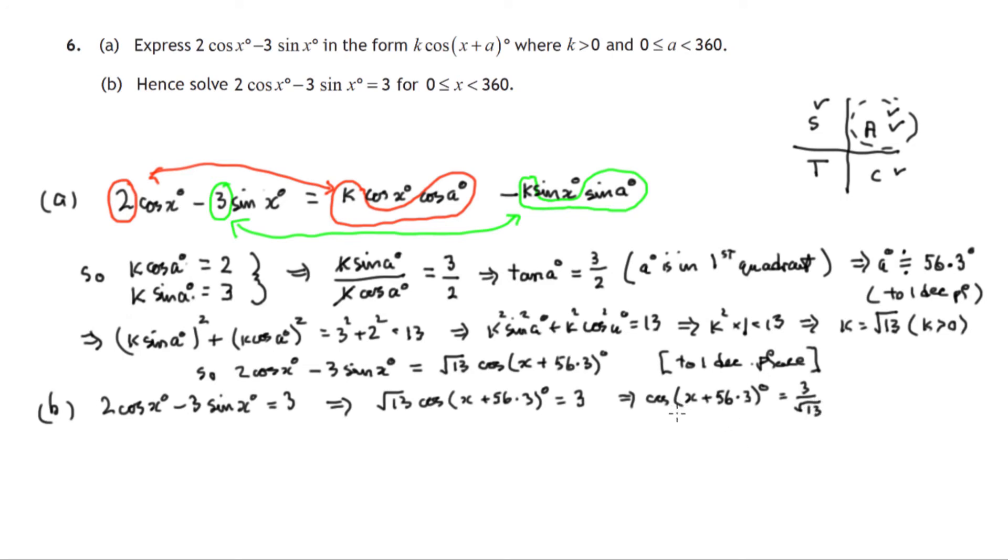So the cosine is positive. Now that happens in the first and the fourth quadrants. So let's write that down. The angle happens to be x plus 56.3 degrees. And that angle must be in the first or the fourth quadrants.